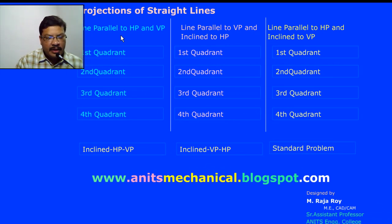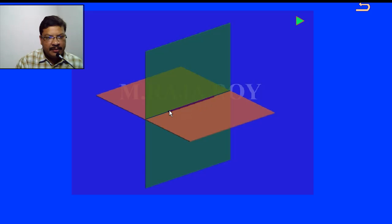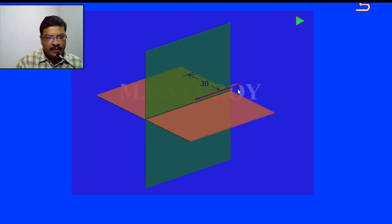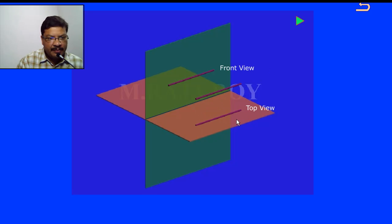Now we will see the first case — the line parallel to both HP and VP in the first quadrant. The line is some 20mm above HP and 30mm in front of VP. The front view is obtained 20mm above the horizontal plane, and the top view is obtained on the horizontal plane, 30mm from the vertical plane.